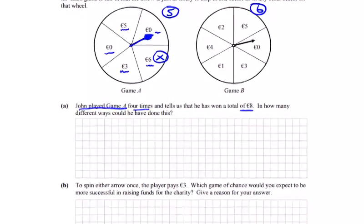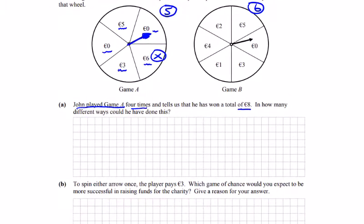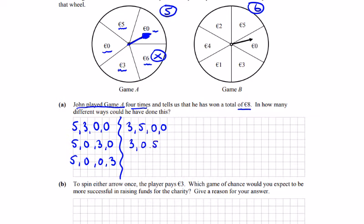So let's start with 5. Then he can get a 3, and he'd have to get two zeros. The 3 could be second, the 3 could be third, or the 3 could be fourth. If we start with a 3, the 5 could be second, the 5 could be third, or the 5 could be fourth.